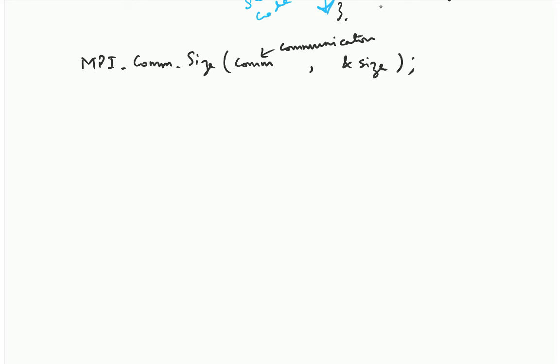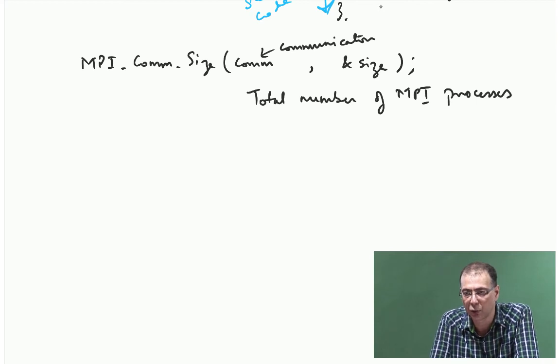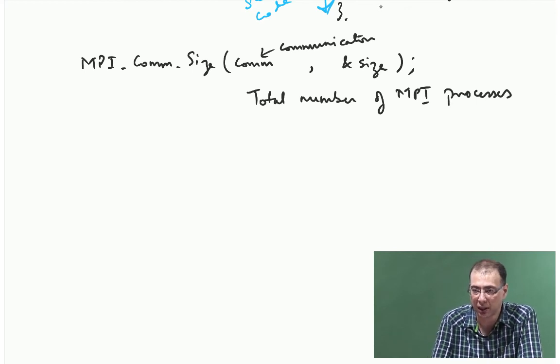What does this return? This basically returns you the total number of MPI processes in the system. If you launch with 4 MPI processes, -np 4, then inside the code you can query the total number of processes by using this API and it will return you 4. If you launch with 10, it will return you 10.